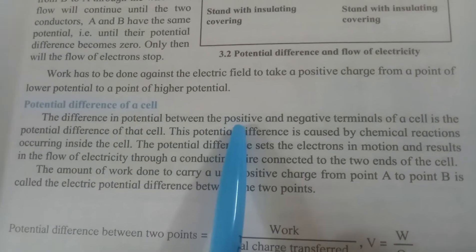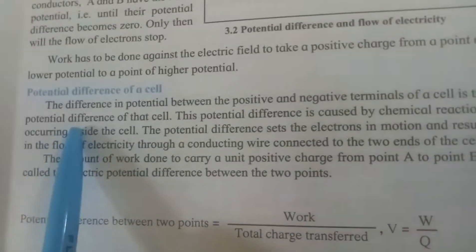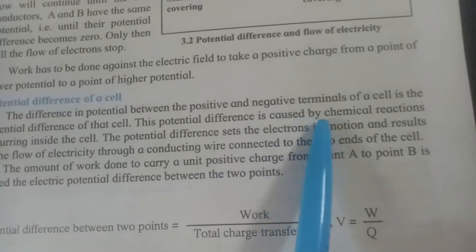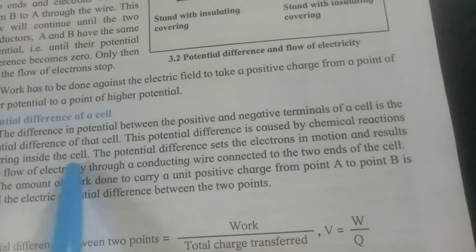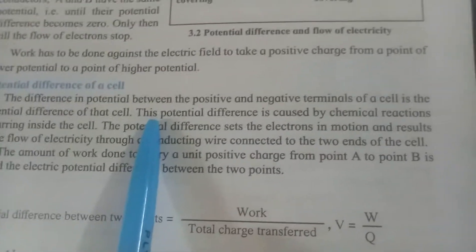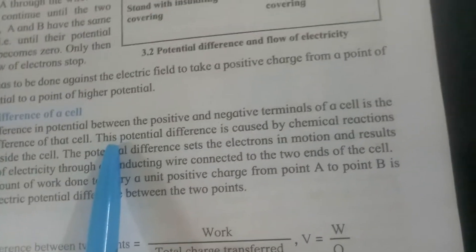So, differences in negative and positive terminals are the potential difference of that cell. This potential difference is caused by the chemical reaction occurring inside the cell. In our previous standard, we have seen many cells that was simple cell. Okay, so button cell.